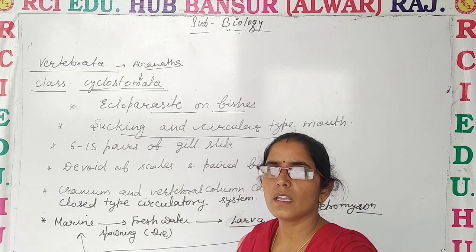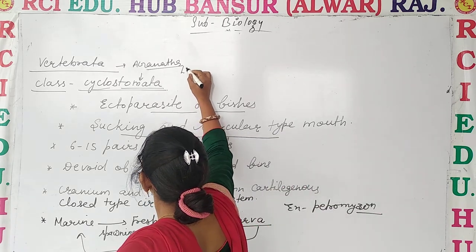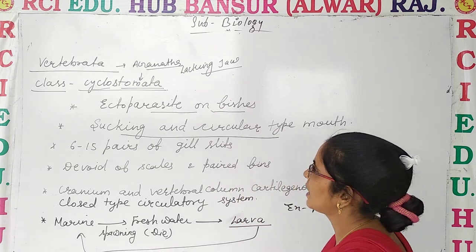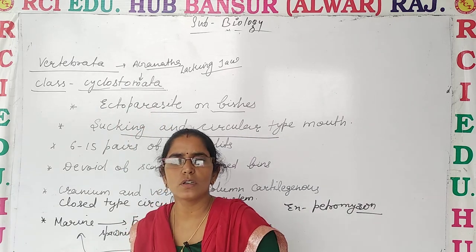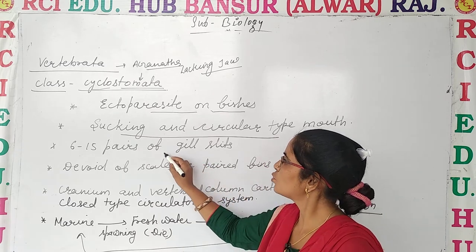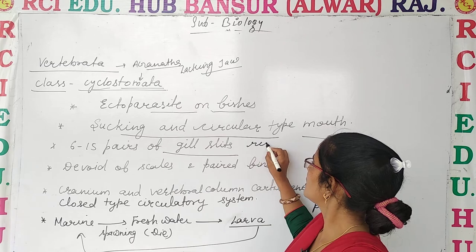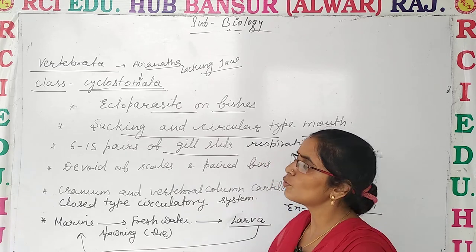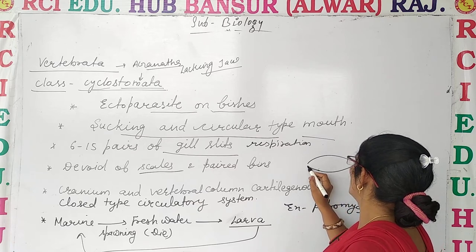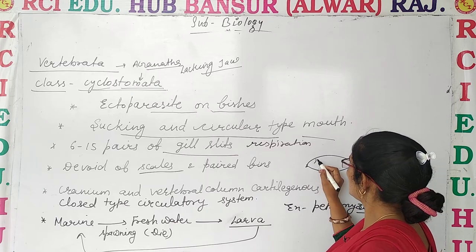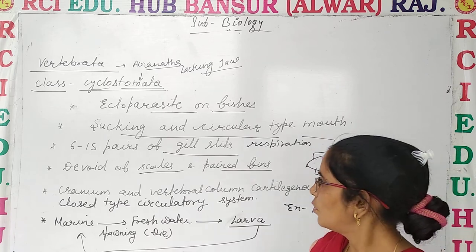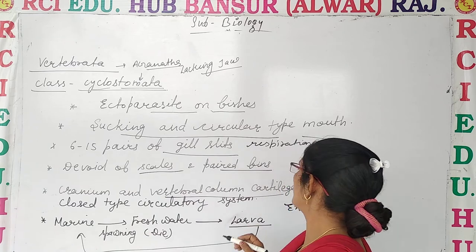They have a sucking type of mouth — the mouth is circular and sucking type. They have 6 to 15 pairs of gill slits, and respiration is carried out using these gill slits. The body is devoid of scales — the body does not have any type of scales. The fins are paired.